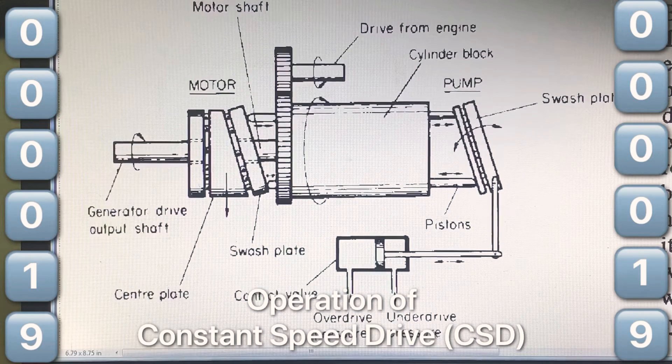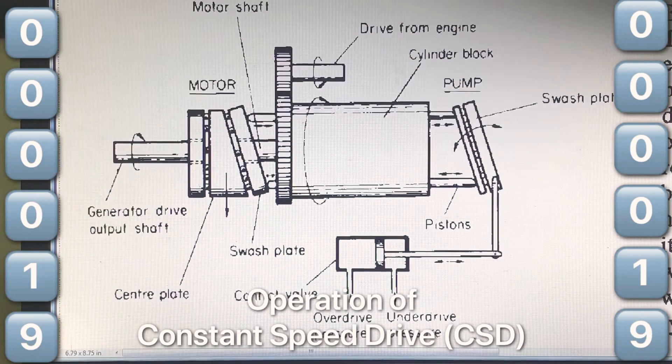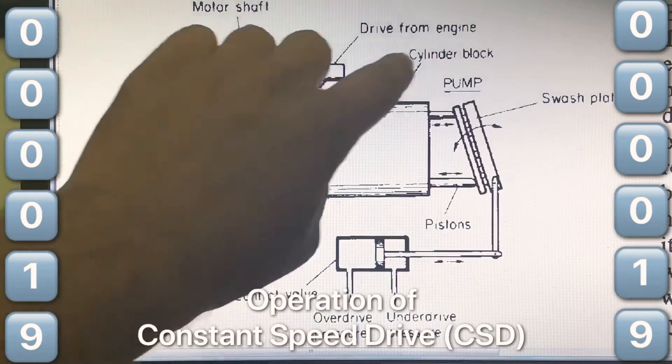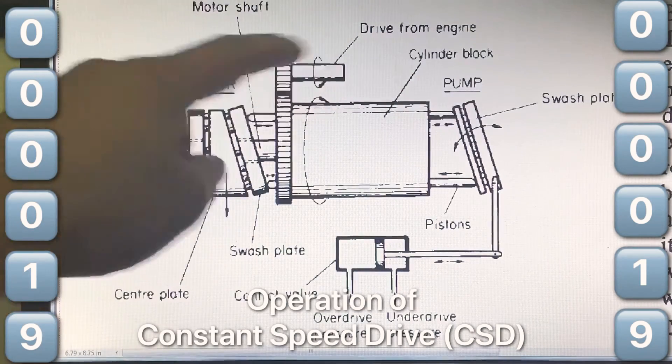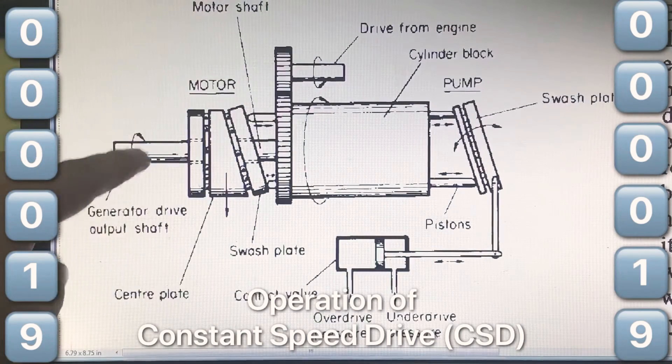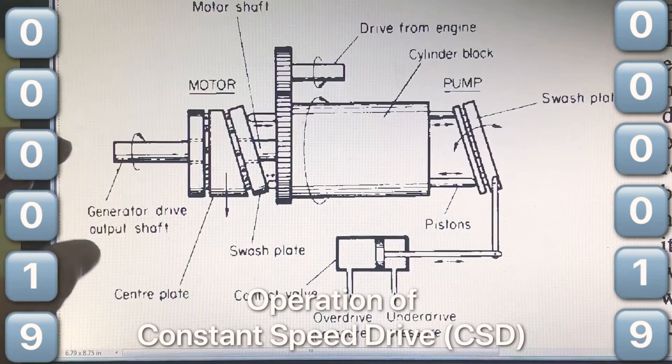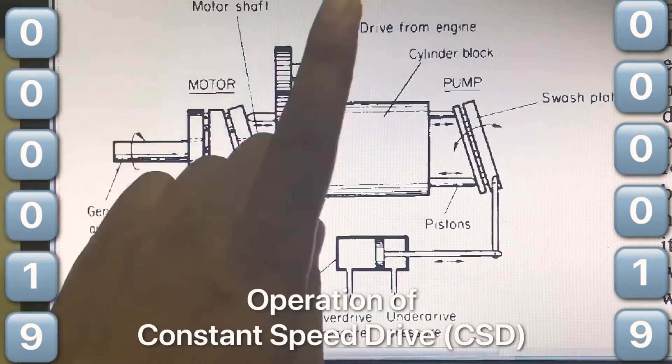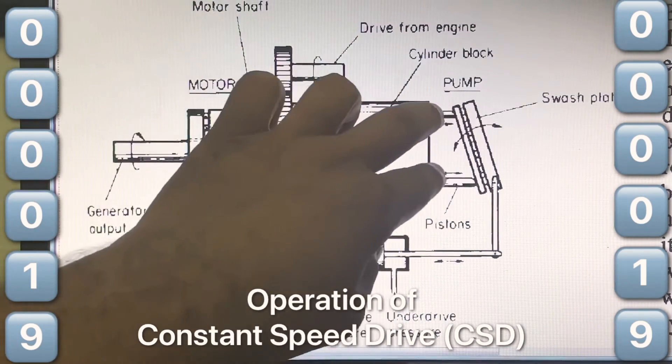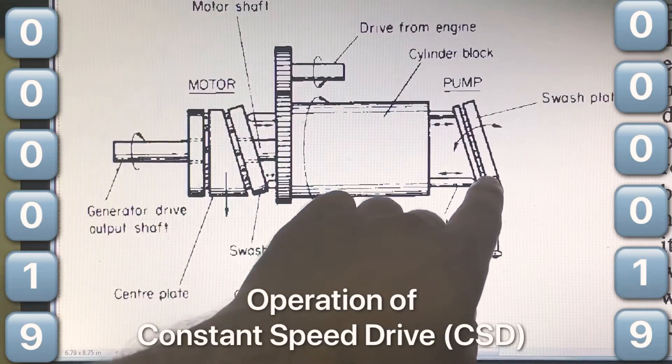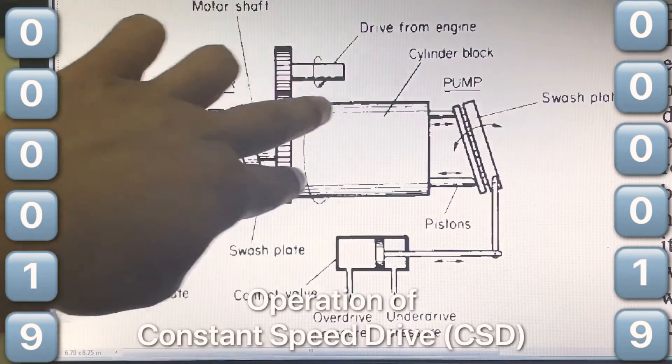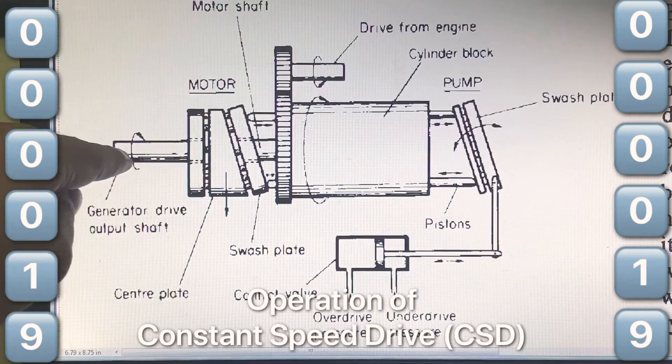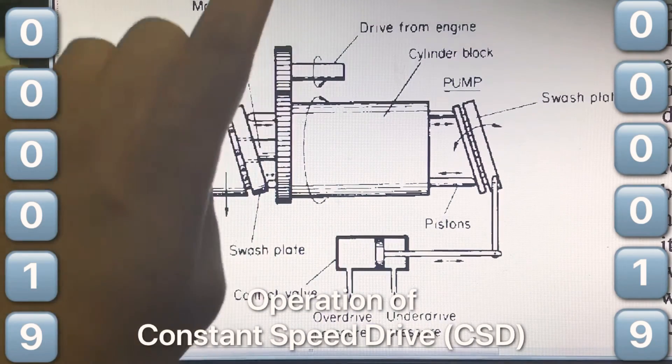When the engine output drive or input to CSD is greater than the required generator speed, then the governor systems will sense this difference and this applies less pressure to the pump to move its swash plate. Then the hydraulic pump will act to reduce the speed of the output. This is called as underdrive condition.